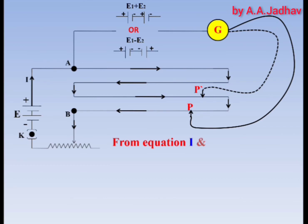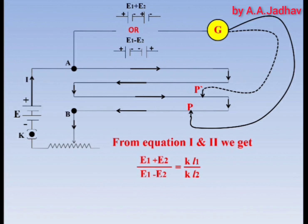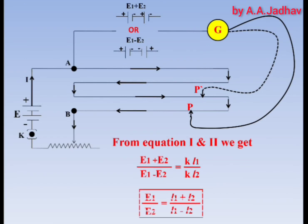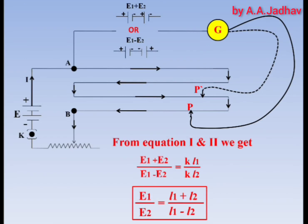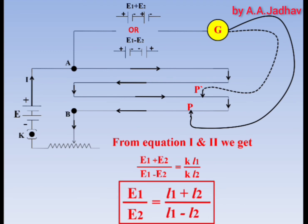From Equation 1 and Equation 2 we can write: (E1 plus E2) / (E1 minus E2) = k·L1 / k·L2. Simplifying this equation by using componendo and dividendo, we get E1 / E2 = (L1 plus L2) / (L1 minus L2). Using this formula, the EMFs of two cells can be compared by potentiometer. Now we will discuss precautions while using the potentiometer.